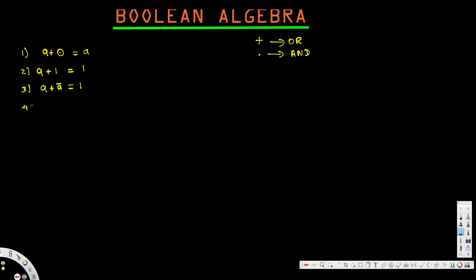Now let's look at AND gate examples. For a · 1: in an AND gate, if one input is zero the whole thing is zero. But we don't know what a is — if a is one the result is one, and if a is zero the result is zero. So it depends on a, therefore a · 1 = a.